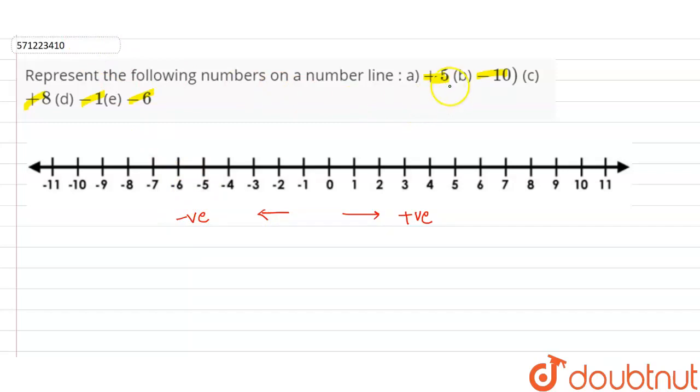First is plus 5. So, plus 5 is on the right hand side of the 0. So, this is plus 5. This is plus 5.